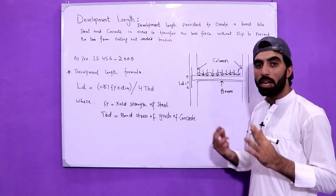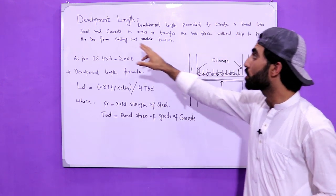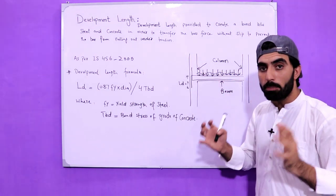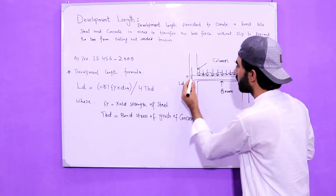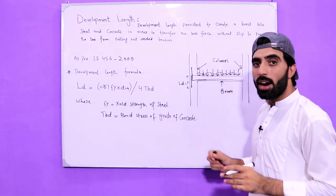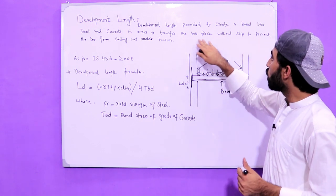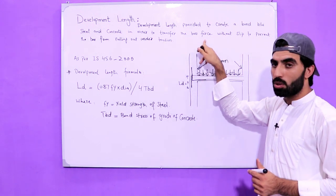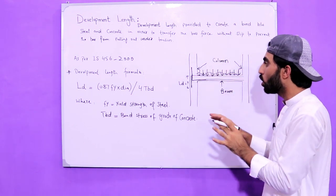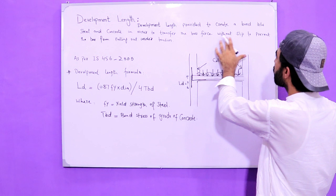So why do we provide development length? Development length is provided to create a bond between steel and concrete. Here this is the column and this is the beam, so it creates a bond between steel and concrete over this length. The bottom bar goes like this, creating a bond between the two materials. It transfers the bar force — the steel bar transfers the self-load of the beam as well as the structural load.